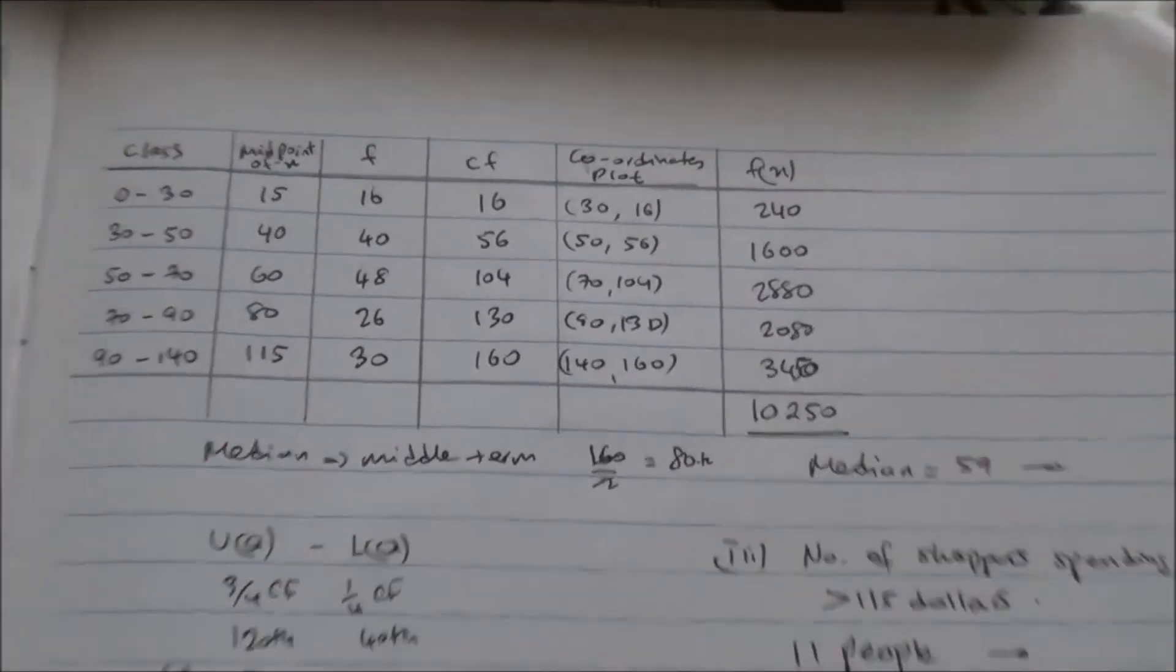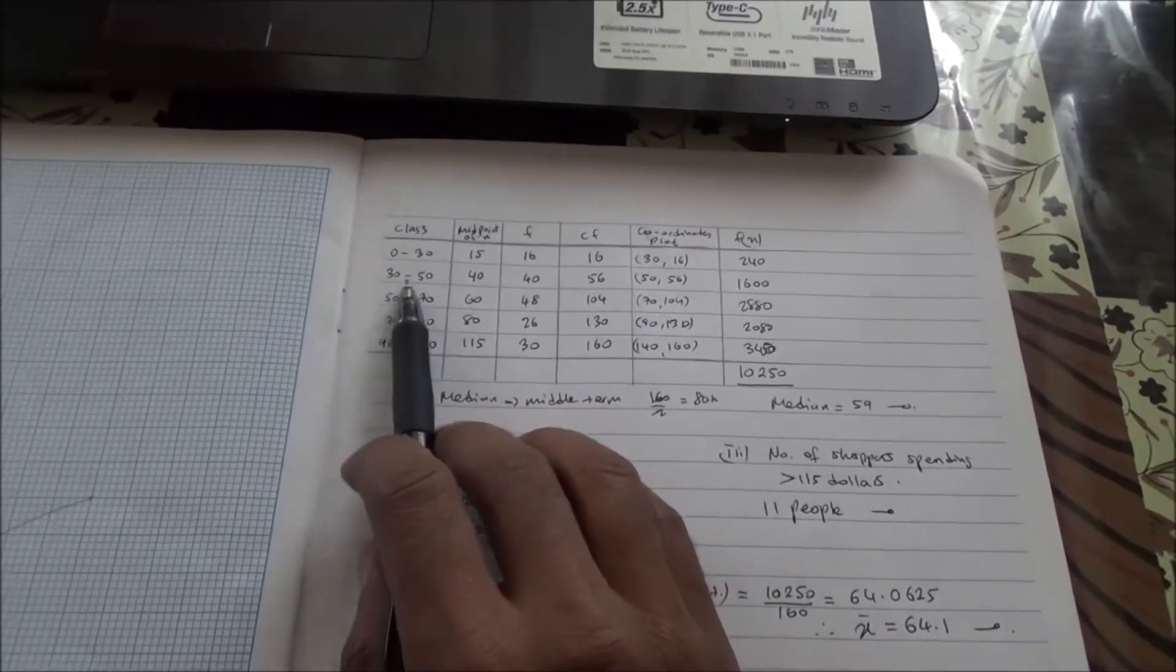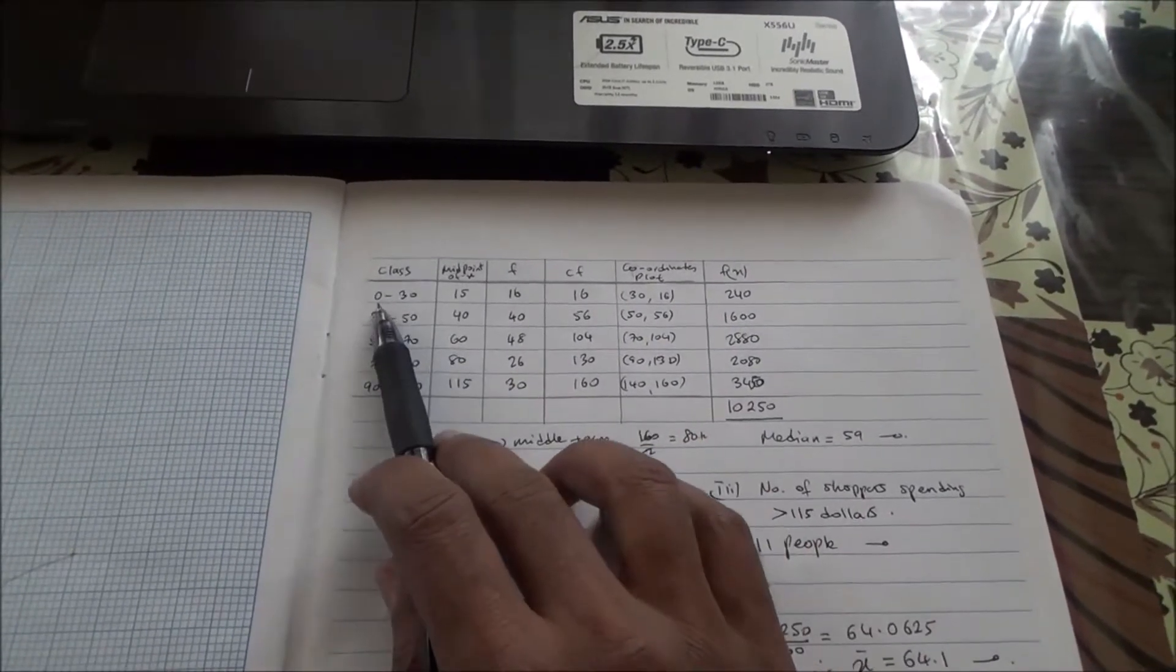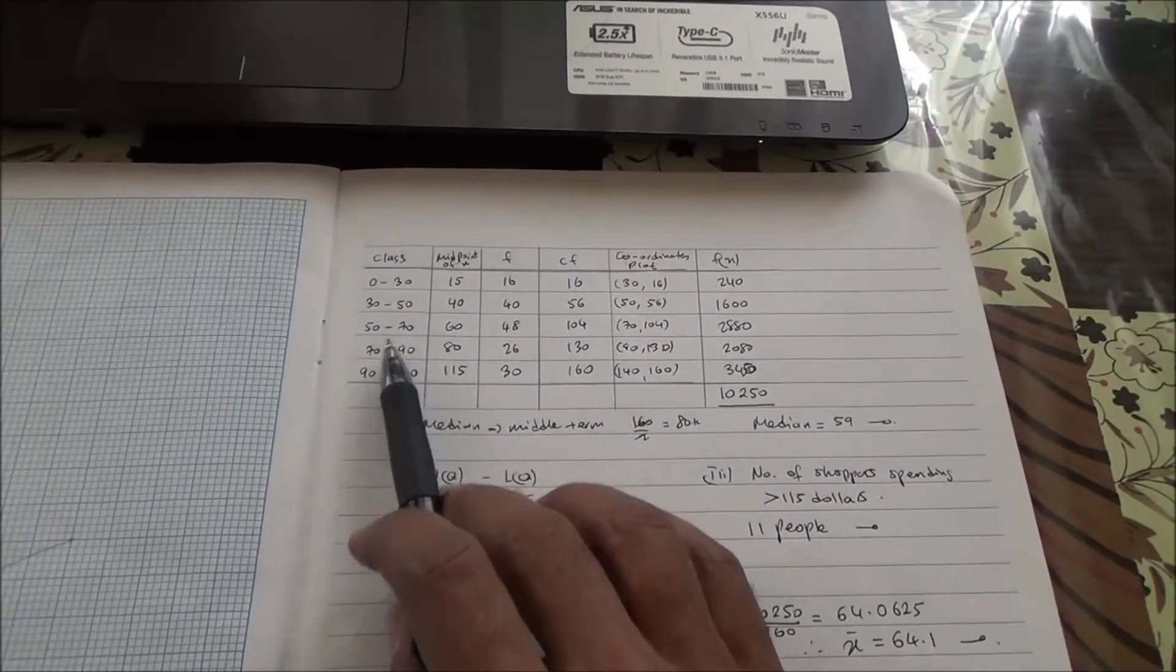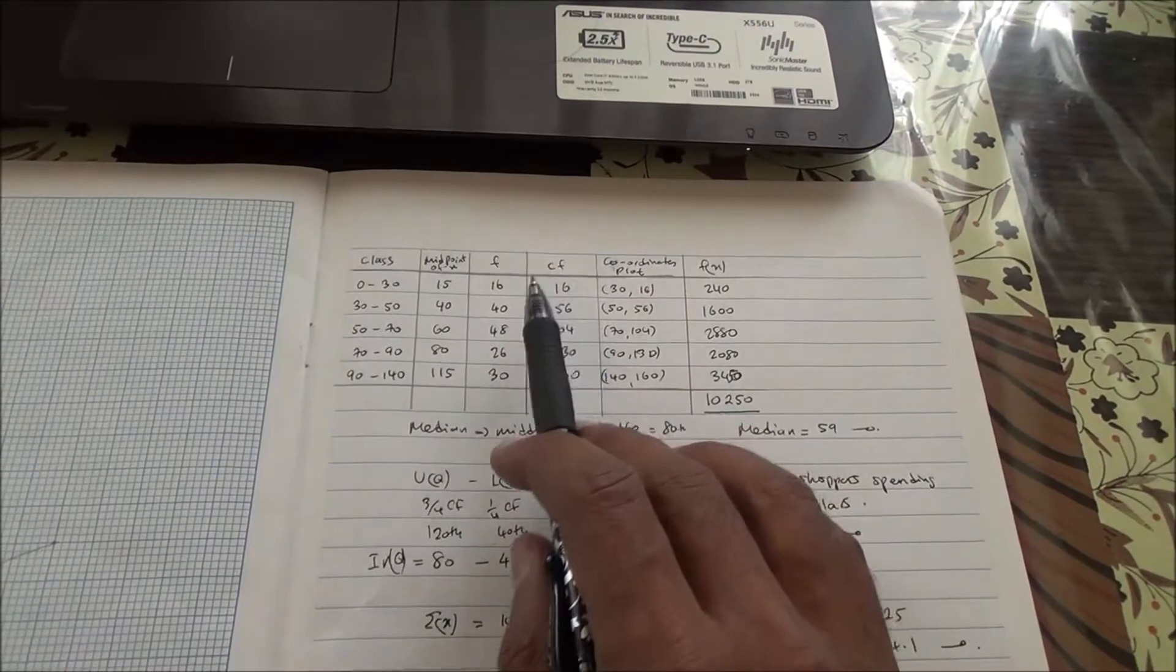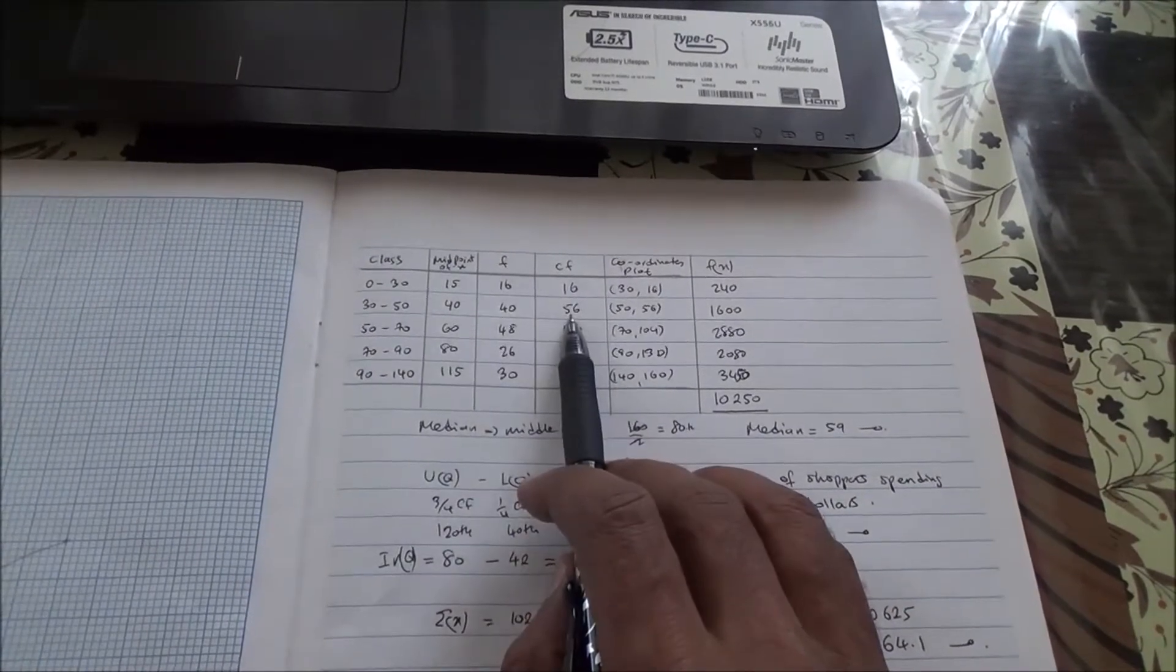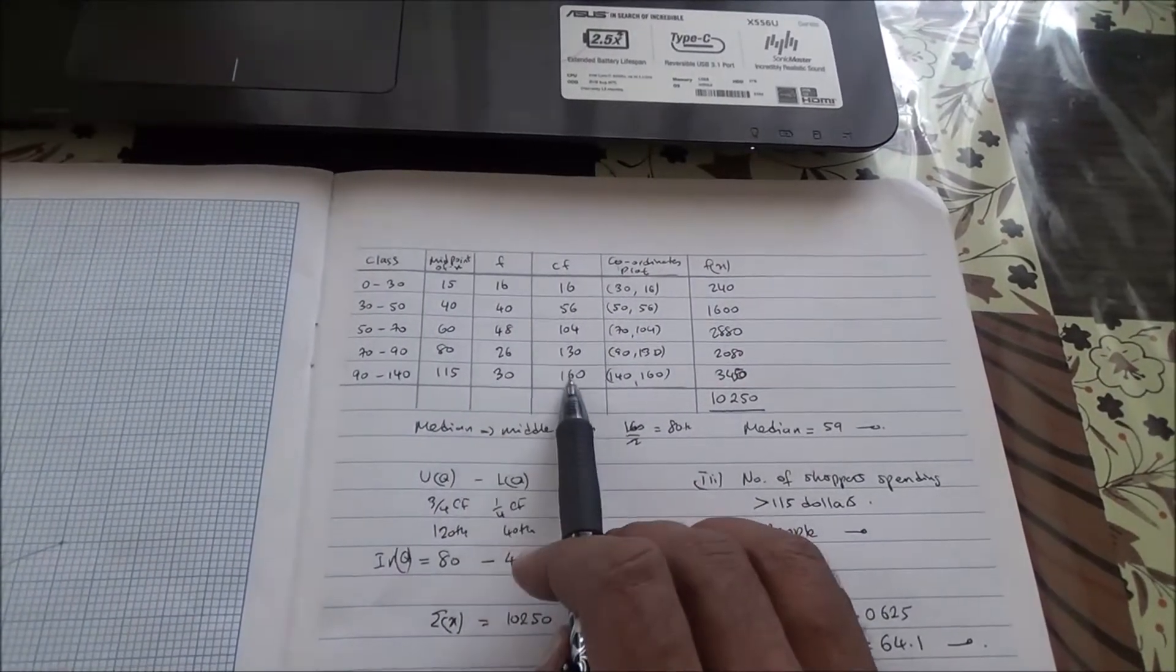To be able to do something like this, what I've done is I've drawn a new table here. So this is what's been given in the question: 0 to 30, 30 to 50, and an additional column. I've put a midpoint column here. 0 plus 30 divided by 2 is going to be 15, and similarly I've done for each interval to get the midpoints. The frequency has been given and therefore I've constructed the cumulative frequency table starting from 16, then 16 plus 40 is 56, plus 48 is 104, plus 26 is 130, plus 30 is 160.